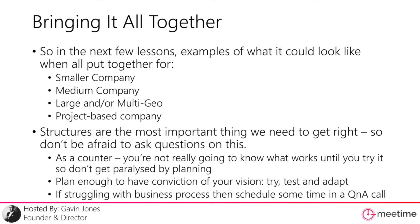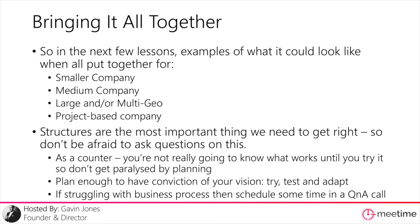We want to plan enough to have conviction of your vision, because as soon as you start trying to roll this out to people and they push back — saying why are we doing it, I don't want to do this — you need to have planned enough that you've got real conviction about the vision you want to move to. We go through counters to resistance in phase two as part of change management. Basically we just want to try stuff, test it, adapt, and have the mindset that this is the vision we want to go to. Listening and changing based on feedback is a good thing.